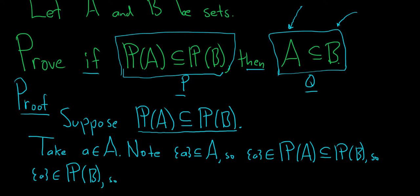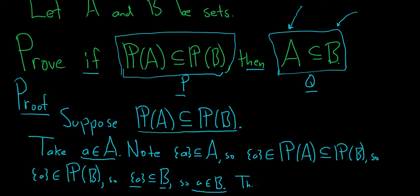This means that the set containing little a is actually a subset of B. That means that every element in this set is an element in B, so little a is in B. We started with an element in A and showed that our element is in B. Thus, A is a subset of B, and that completes the proof. I hope this video has been helpful.